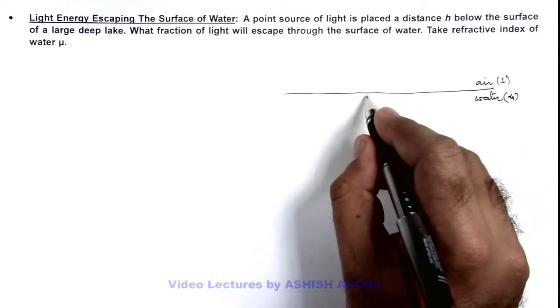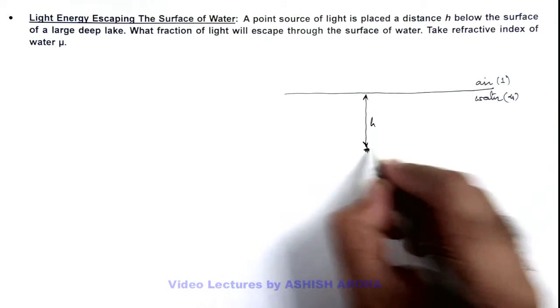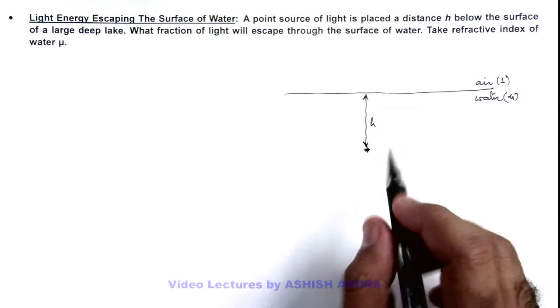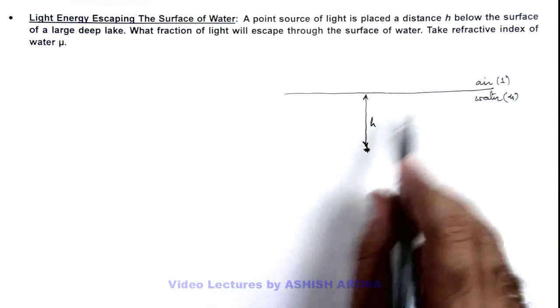Below this lake inside water at a depth h, a point source of light is placed. In this situation we are required to find the fraction of light energy of this source which escapes from the water surface.